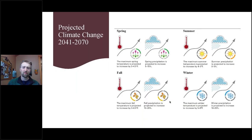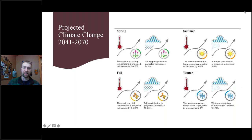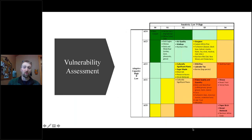Projected changes out to about 2070 under a continuing emissions scenario show temperature and precipitation changes. Focusing on temperature, it's looking like another increase of three to four degrees annually through the next century, with the biggest increases expected in wintertime.